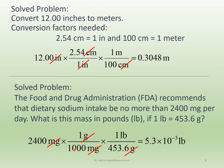Cross out the units to confirm you're left with pounds, then do the calculation. The result has two significant figures — the trailing zeros don't count because there's no decimal point. The best way to express a two-significant-figure answer is in scientific notation: 5.3 × 10⁻³ pounds. You can also leave it as 0.0053, but scientific notation is much better.